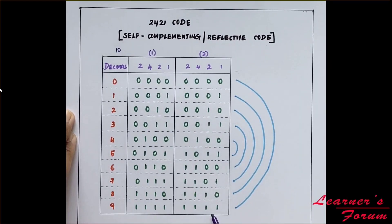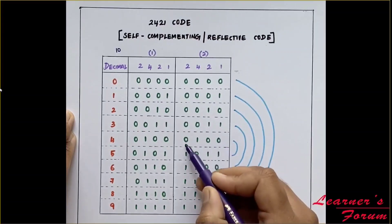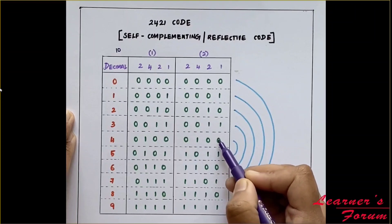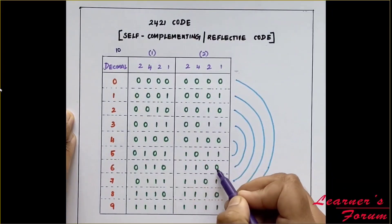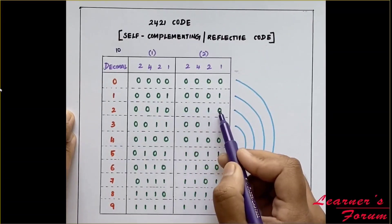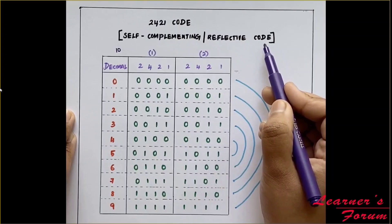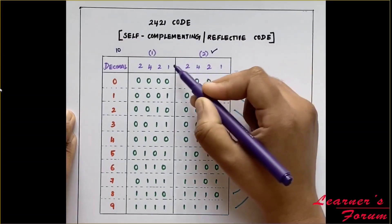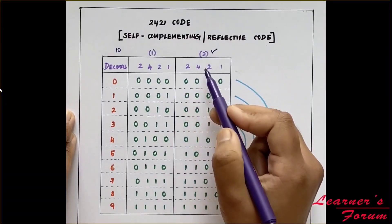The main reason we use the second representation is: if you compare 4 and 5, for 4 the code is 0100. Taking 1's complement — replacing 0 with 1 and 1 with 0 — gives 1011, which is the value for 5. Similarly, taking complement for 3 gives 1100, which is the code for 6. For 2, it is 0010; complement gives 1101, which is the value for 7. This is why it is called self-complementing or reflective code — you complement one value and get its paired complement. So the second representation must be used to satisfy this self-complementing characteristic.